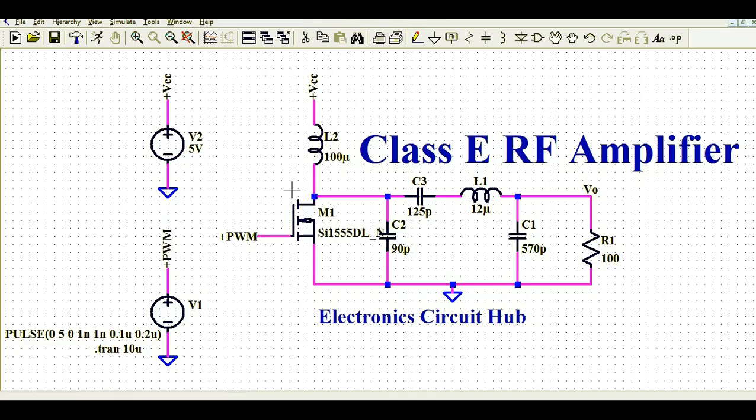Now you can see this is the Class E amplifier topology here. Let us start. Here I have connected 5 volt. This is the 5 volt supply which is going to the inductor L2. Then the other end of inductor is connected to the MOSFET M1.